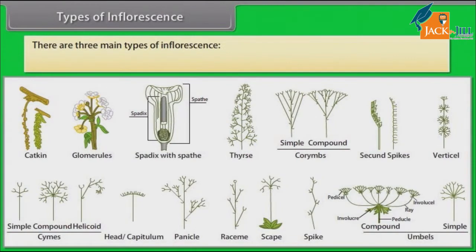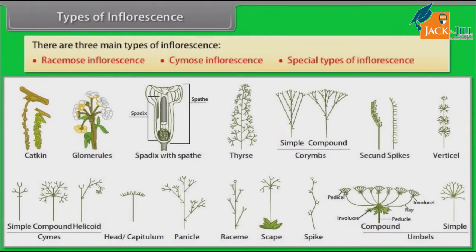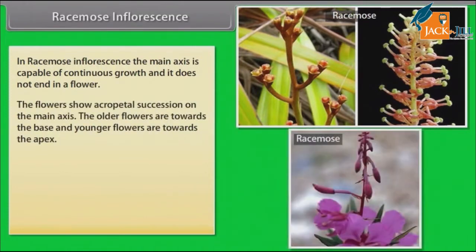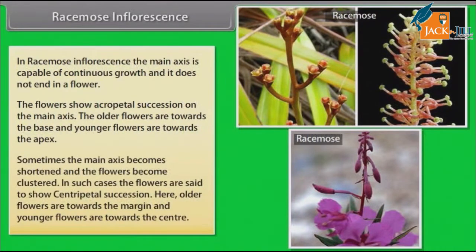There are three main types of inflorescence: racemose inflorescence, cymose inflorescence, and special types of inflorescence. In racemose inflorescence, the main axis is capable of continuous growth and it does not end in a flower. The flowers show acropetal succession on the main axis. The older flowers are towards the base and younger flowers are towards the apex. Sometimes the main axis becomes shortened and the flowers become clustered; in such cases the flowers show centripetal succession, where older flowers are towards the margin and younger flowers are towards the center.